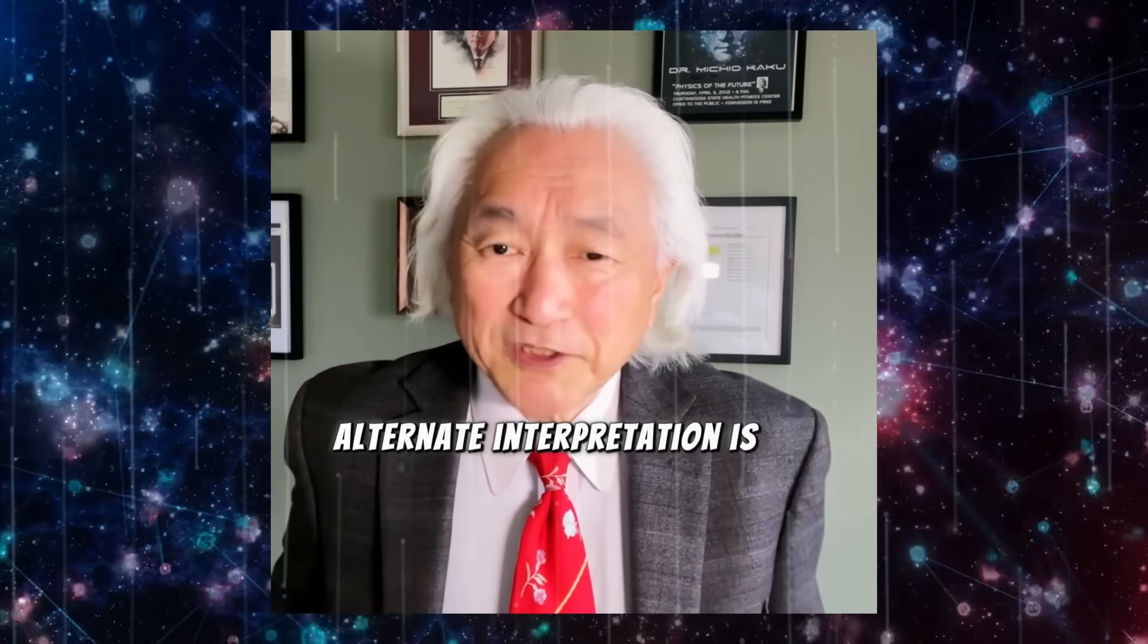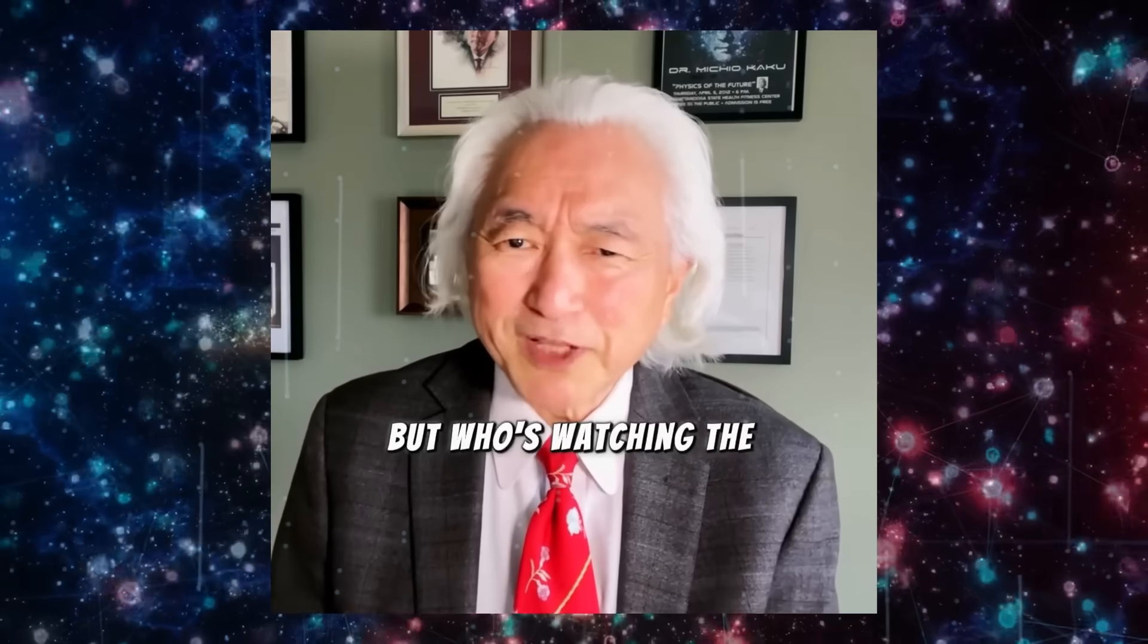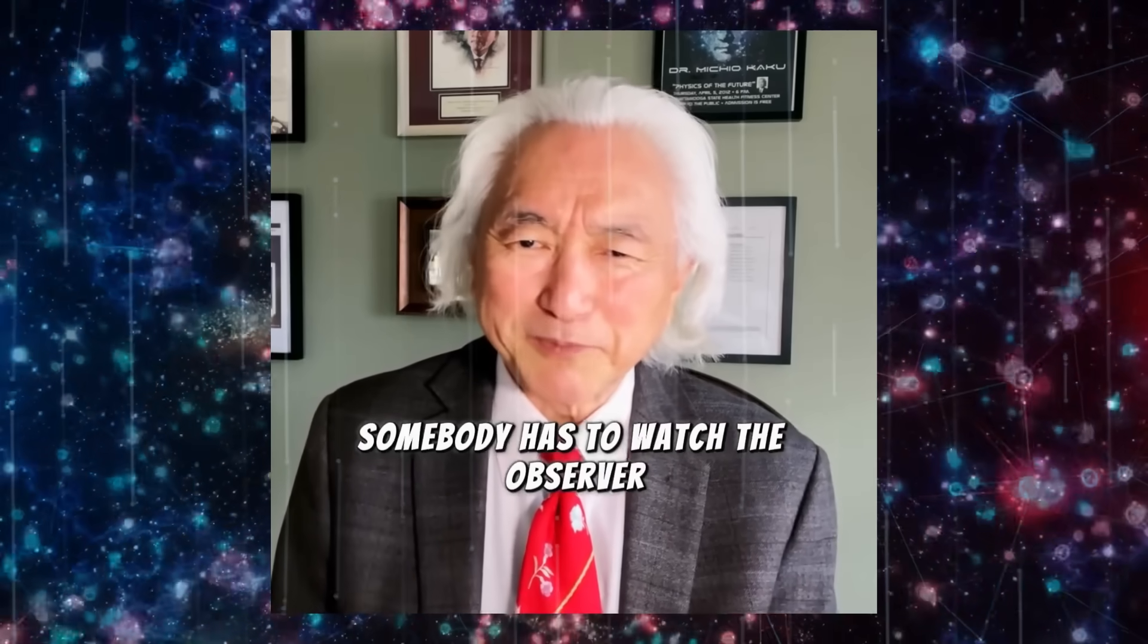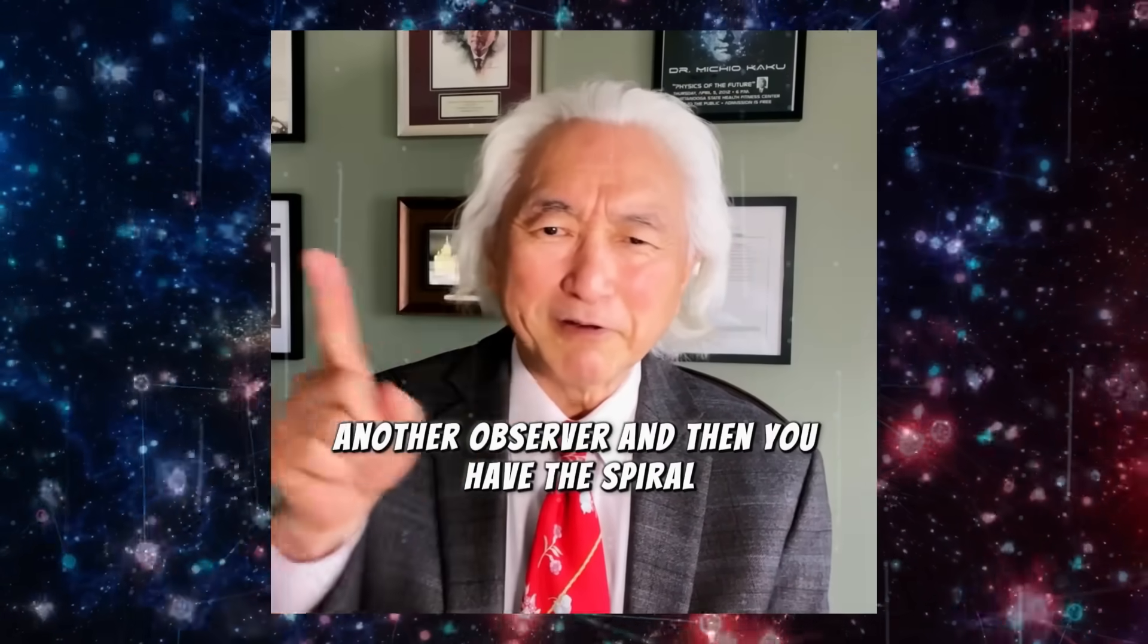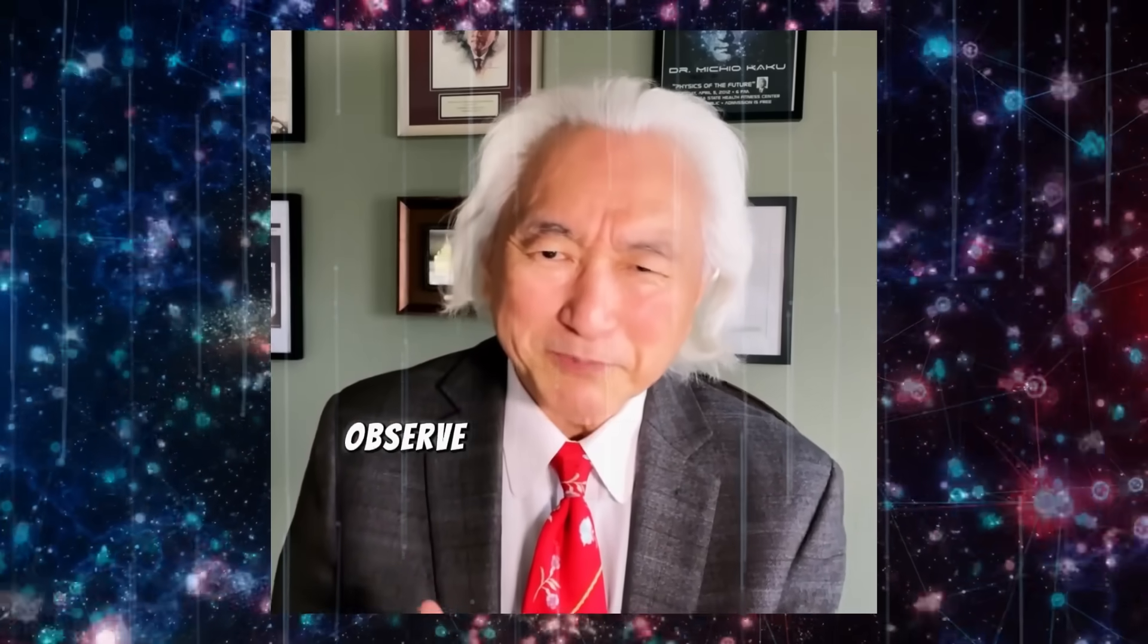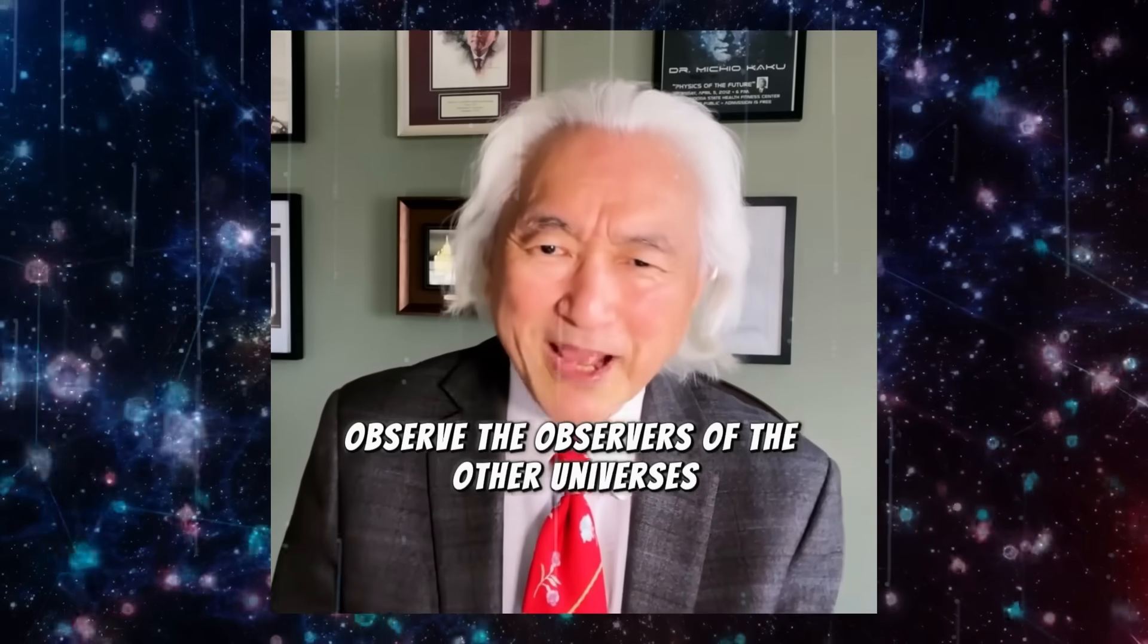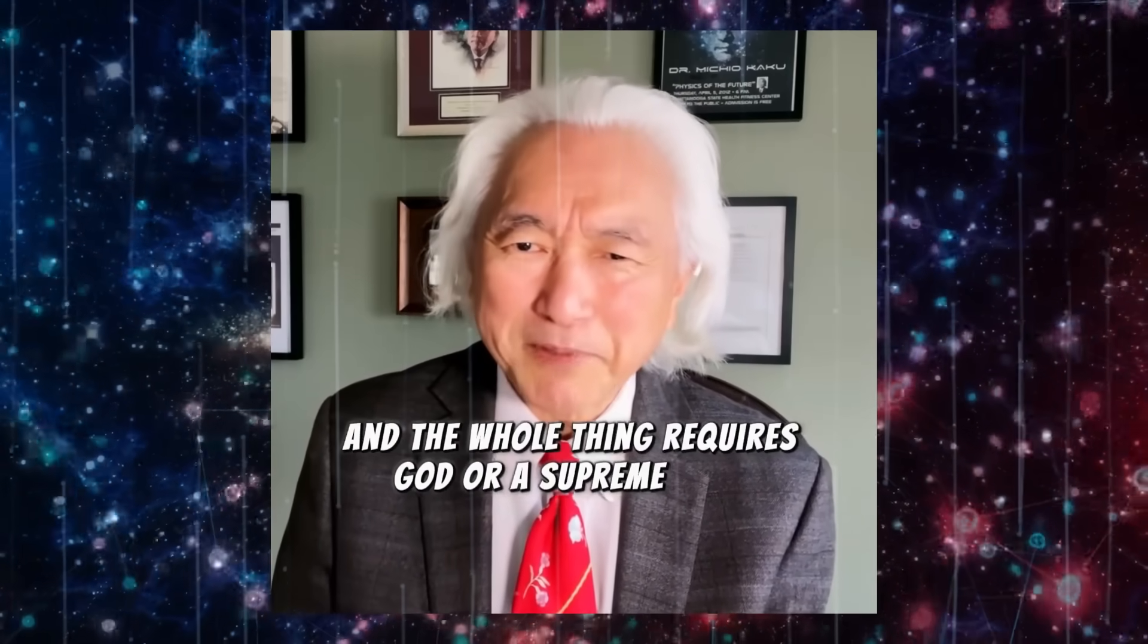The other alternate interpretation is the Wigner interpretation, because every experiment has to have an observer, but who's watching the observer? Somebody has to watch the observer, but who's watching the observer watching the observer? Well, another observer. And then you have the spiral, the spiral of observers watching other people observe the observers of the other universes, and the whole thing requires God or a supreme being.